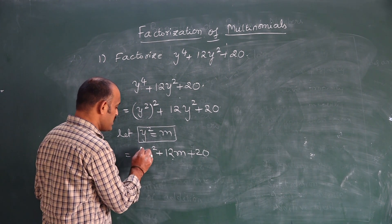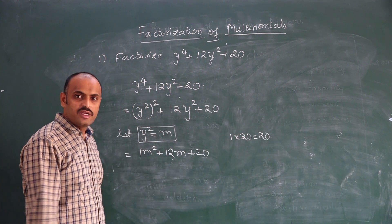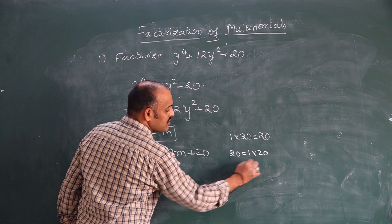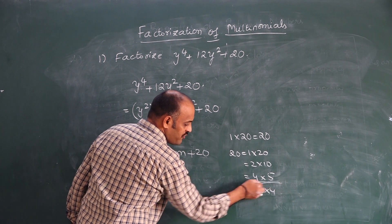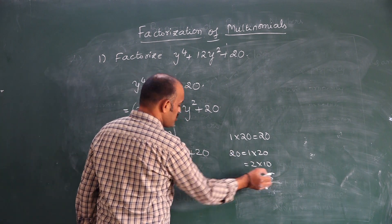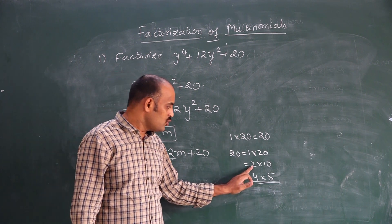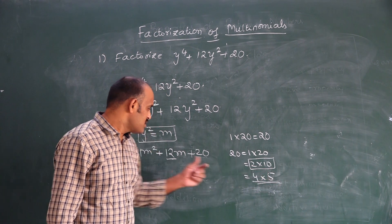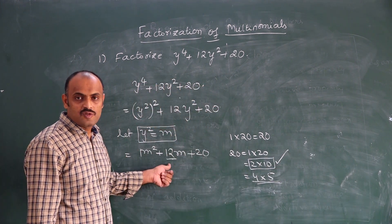Once in descending order, multiply the coefficient of the first term and the last term: 1 × 20 = 20. We need to write 20 as a product of factor pairs: 1×20, 2×10, or 4×5. The sum of any two factors should give the middle term coefficient. 2 + 10 = 12, and 2 × 10 = 20. So this factor pair is used to split the middle term.